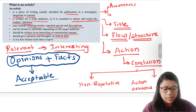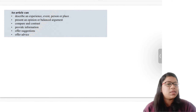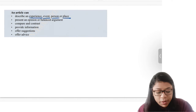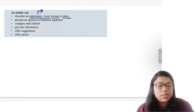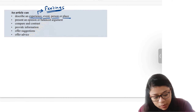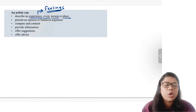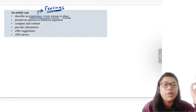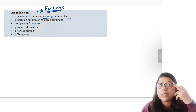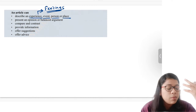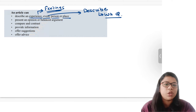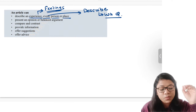Moving on — an article can describe an experience, event, person, or place. When describing an experience, talk about the feelings — experience is always relevant to feeling. For an event, address what you see, hear, and where it was — use WH questions: where, what, how. For a person, highlight their achievements and how they've impacted society.